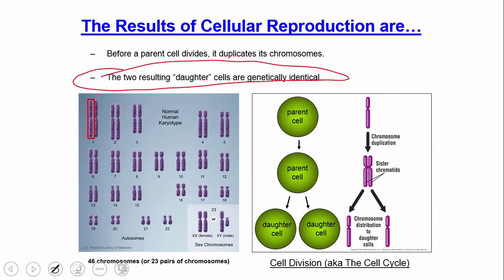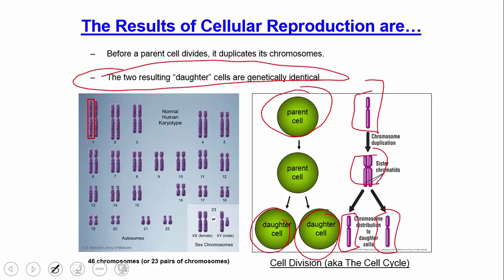If we look at cell division, or the cell cycle, I'm going to start at a very basic level and build from there. We start with a parent cell and end with two daughter cells. Looking at the cell cycle with one chromosome — this would happen with all 46, but I just have one illustrated — we start with one chromosome, it gets duplicated, it divides, and each daughter cell has one chromosome. What we started with and ended with are identical.